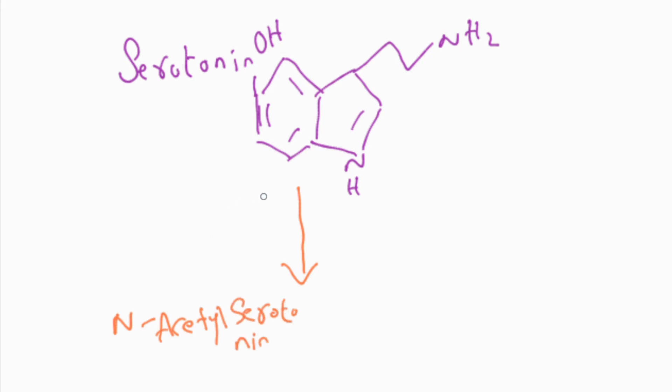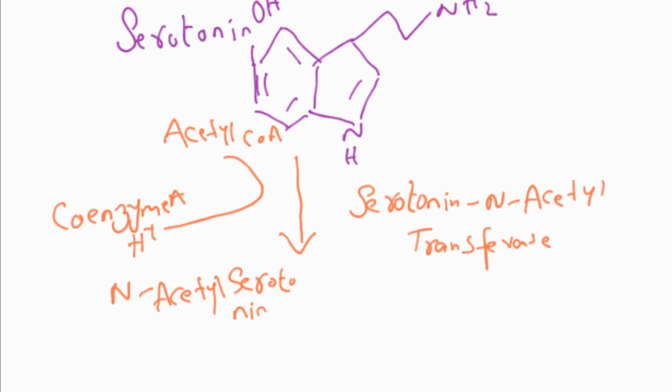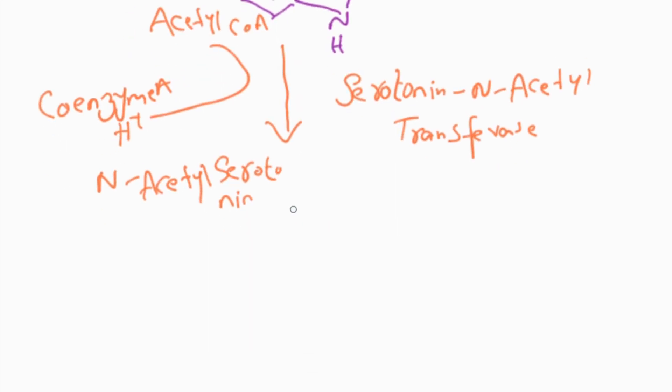Serotonin is converted by the transfer of acetyl group from acetyl-CoA with the help of enzyme serotonin N-acetyltransferase, and the structure of N-acetylserotonin is formed.